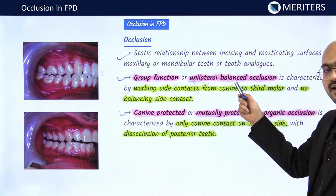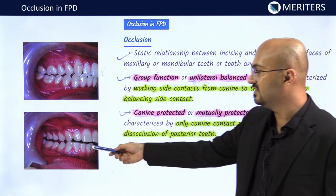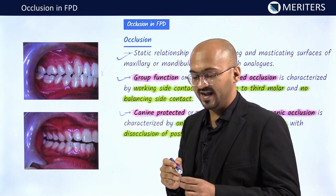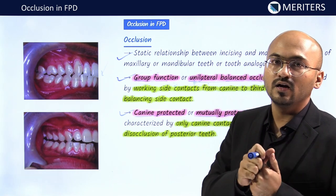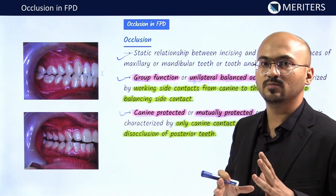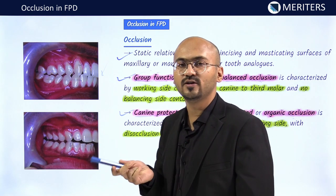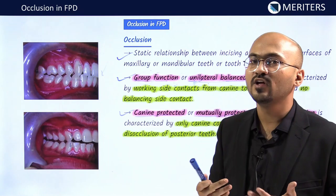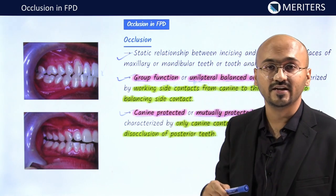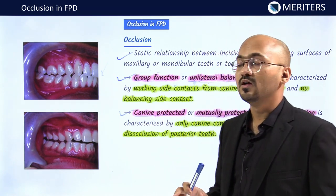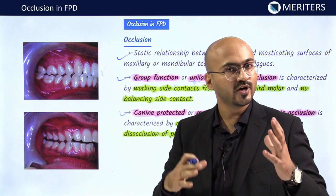Next is canine protected, mutually protected, or organic occlusion. In this occlusion, only the canines are touching in lateral movement. Lateral movements are also called excursion — anything apart from maximum intercuspation, which is when you close in a cusp-to-fossa relation in the most closed position. In canine protected occlusion, only the canines touch when you move your jaw right to left. You can have canine guided on one side and group function on the other — it is very normal to have a variable occlusal scheme.